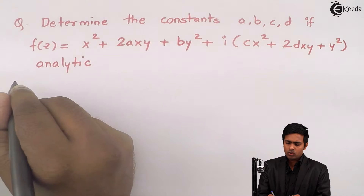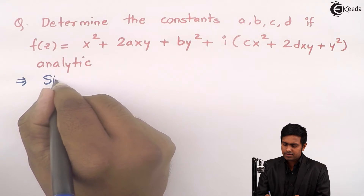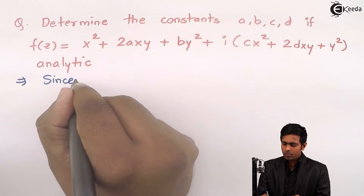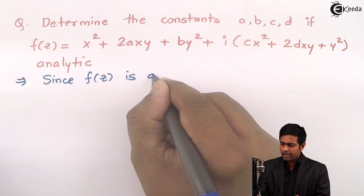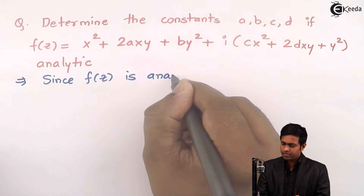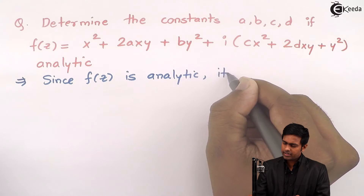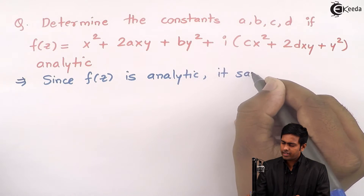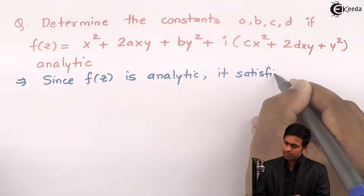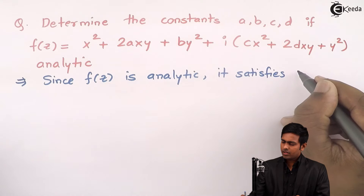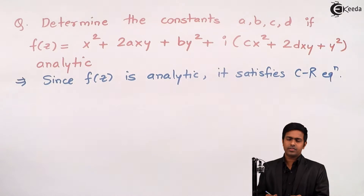Now how to get the values? Since f of z is analytic, it satisfies the Cauchy-Riemann equations, and from the Cauchy-Riemann equations we can get the values of a, b, c and d. So let us start.